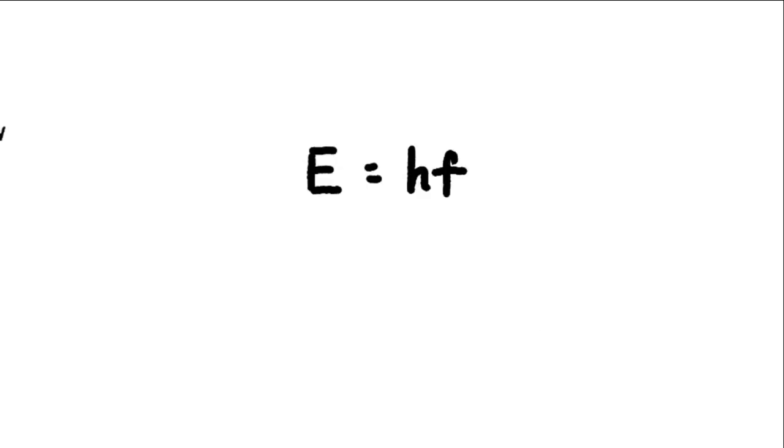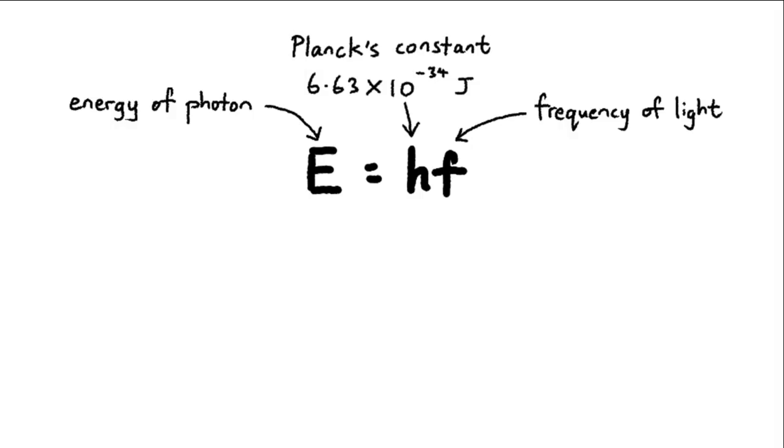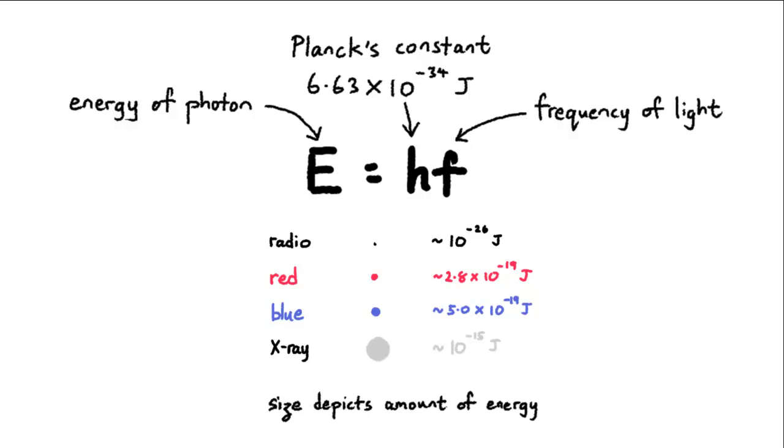According to the photon theory, the amount of energy a photon carries is directly proportional to the frequency of the light. E equals hf. H is Planck's constant, which turns out to be a very small number. So photons come in really tiny packets.